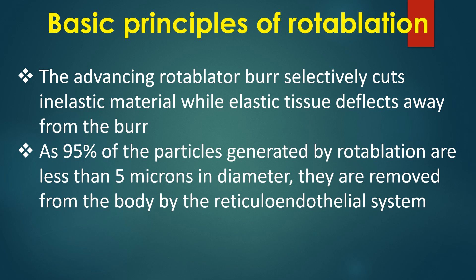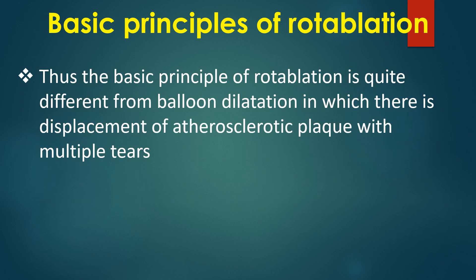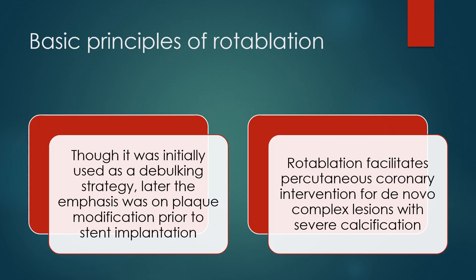As 95% of the particles generated by rotablation are less than 5 microns in diameter, they are removed from the body by the reticuloendothelial system. Thus, the basic principle of rotablation is quite different from balloon dilatation, in which there is displacement of atherosclerotic plaque with multiple tears. Though it was initially used as a debulking strategy, later the emphasis was on plaque modification prior to stent implantation.